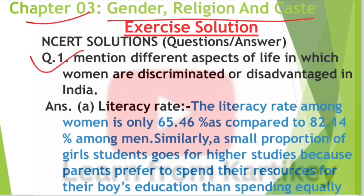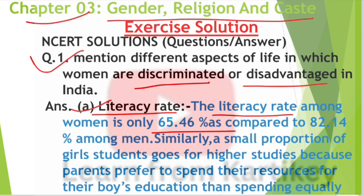Question number 1: Mention different aspects of life in which women are discriminated or disadvantaged in India. First point — literacy rate: the literacy rate among women is only 65.46 percent as compared to 82.14 percent among men. A small proportion of girl students go for higher study because parents prefer to spend resources on their boys' education.